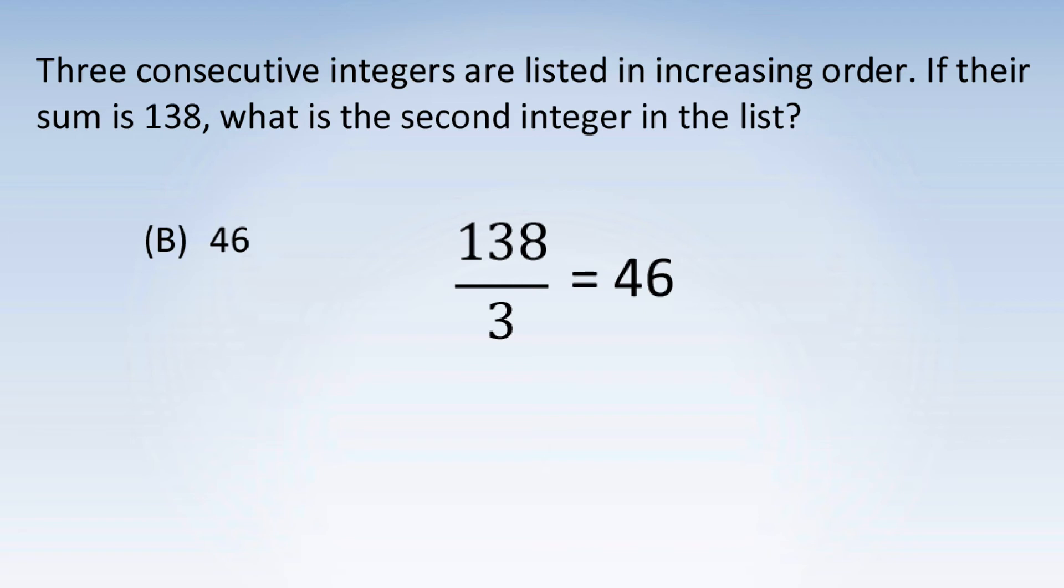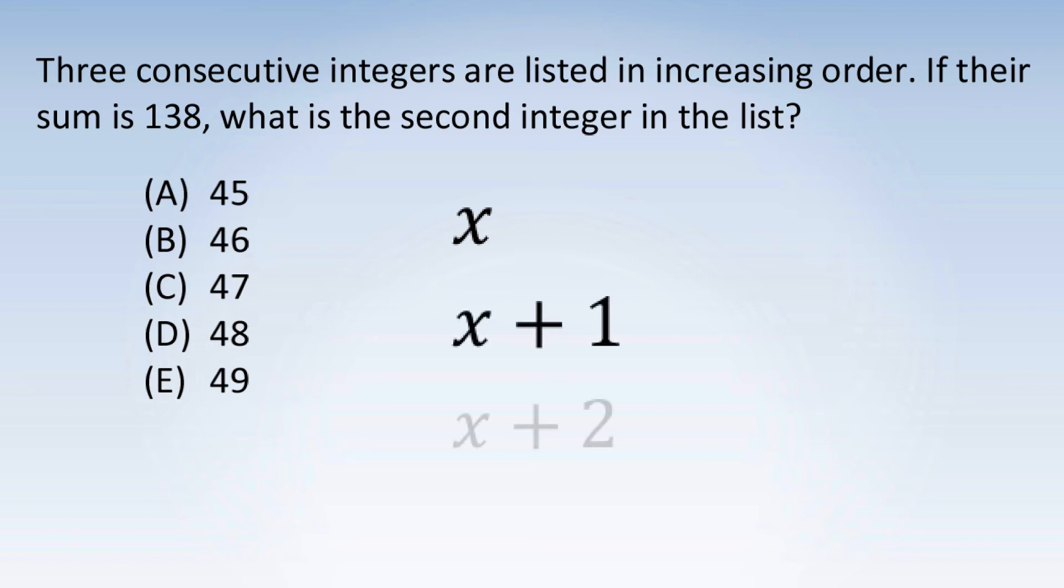This can also be seen by solving this problem algebraically. Although I do not recommend this method of solution for the SAT, I will include it for completeness and for those more advanced students who are very comfortable with algebra. If we name the least integer x, then the second and third integers are x plus 1 and x plus 2.